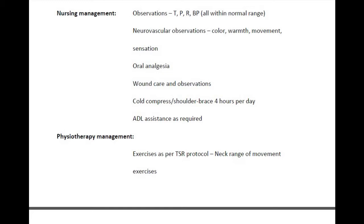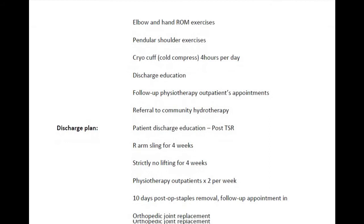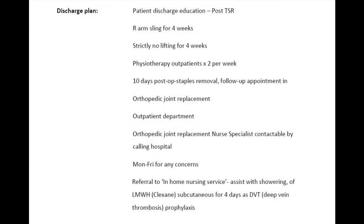Therefore, we should pick out all the relevant information a home nurse needs to know. The two key aspects to keep in mind while writing a letter are the purpose of the letter and to whom the letter is written. Try to pick out the relevant information from the case note by keeping these aspects in mind, and organize this information to maintain the continuity of the letter. In the discharge plan, most of the information given is important, such as the right arm sling for four weeks, no heavy lifting for four weeks, removal of post-operative staples after 10 days, and follow-up appointments. Taking all these points, we have to prepare a letter in an organized manner.